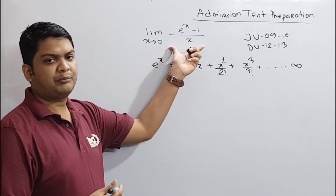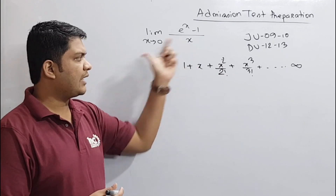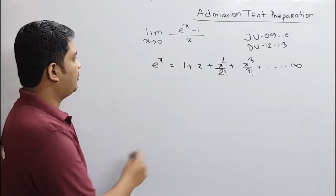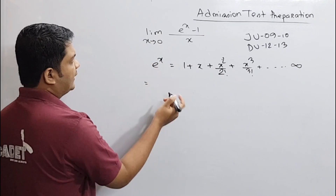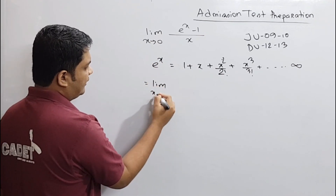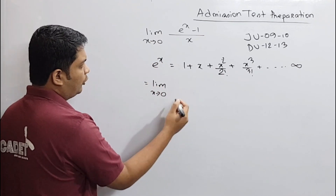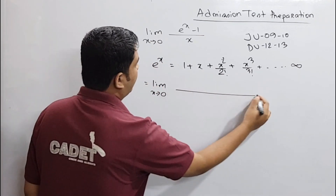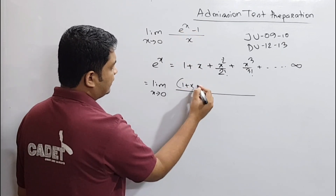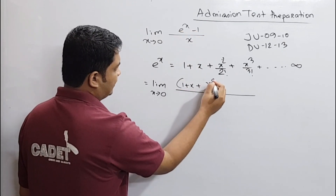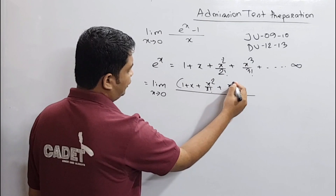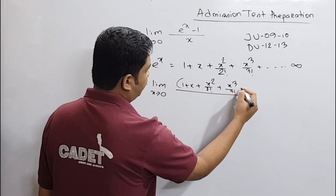So we have to solve this problem. e to the power x equals 1 plus x squared by 2 factorial plus x cubed by 3 factorial.